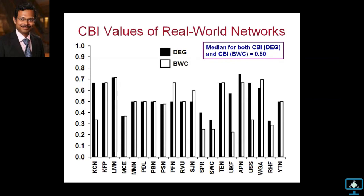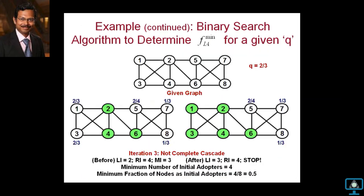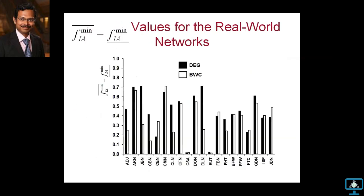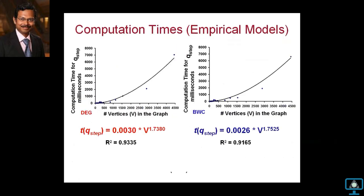In conclusion: this approach uses information cascade to estimate the intracluster density of blocking clusters without needing a clustering algorithm. Using degree centrality as the basis for choosing initial adopters is recommended. Time complexity is less than V². This is a promising alternative to traditional clustering approaches, with the binary search being a key algorithmic contribution. If there are any questions, please feel free to ask.